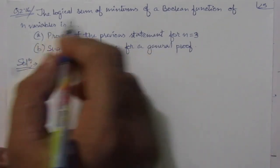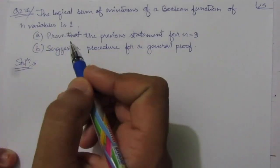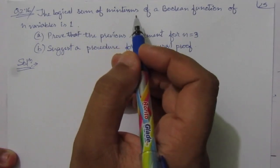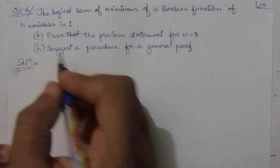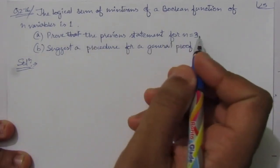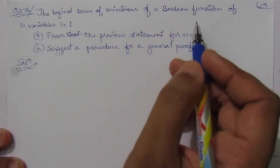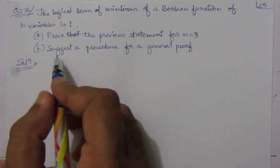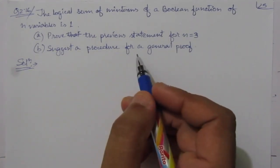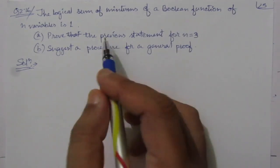The problem is: the logical sum of minterms of a boolean function of n variables is 1. We are given this statement about the logical sum of the minterms, that is sum of products. The first part of the question is to prove the previous statement for n equal to 3, and part B is to suggest a procedure for a general proof.